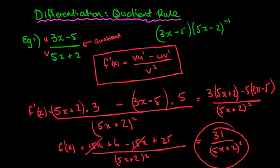So what looks challenging actually isn't too bad once you remember the rule. You can use the product rule each time — there are no issues doing that. It's just that for more challenging questions, such as when you have a square root on the bottom and don't want to deal with negative-half powers, the quotient rule is a very straightforward way of doing it. But you can get away with using the product rule most of the time.